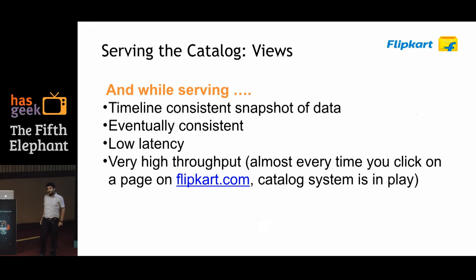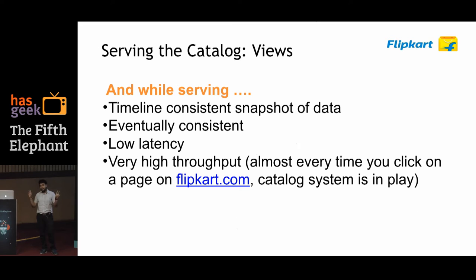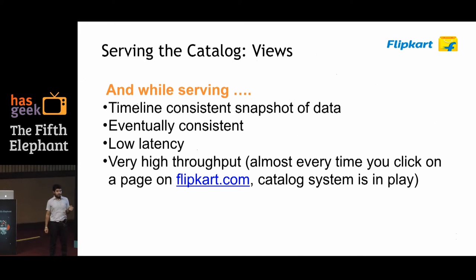Now, what are the underlying caveats? Most importantly, I want timeline consistency in this data. For example, if you're on a product page and a product costs fifty thousand, and then you move to the checkout page and see the price as sixty thousand — that's not the experience I want to give a user. I want all these views to be consistent, and I want this consistency at low latencies and very high throughput. Almost every time you click a link on Flipkart.com, the catalog system is in play, and in a single call graph it may be invoked multiple times.